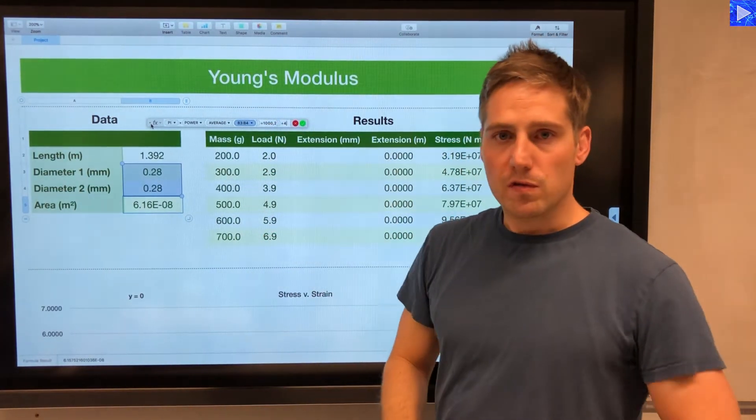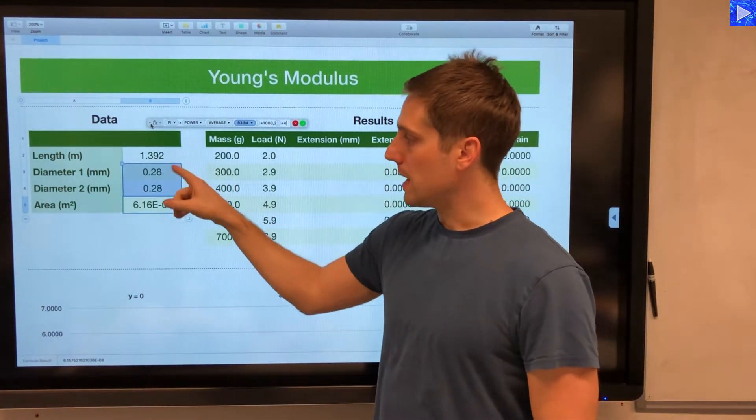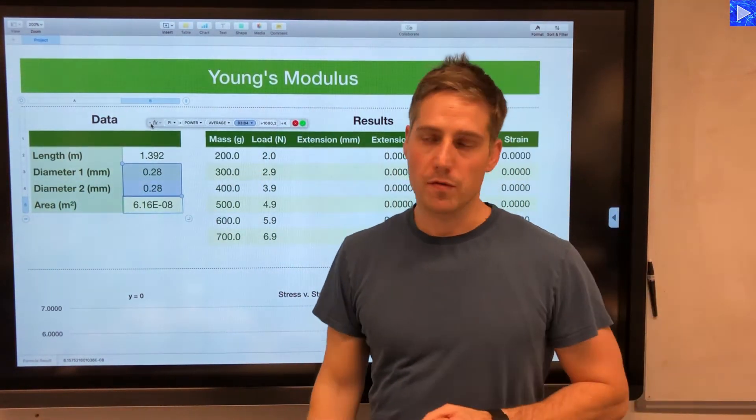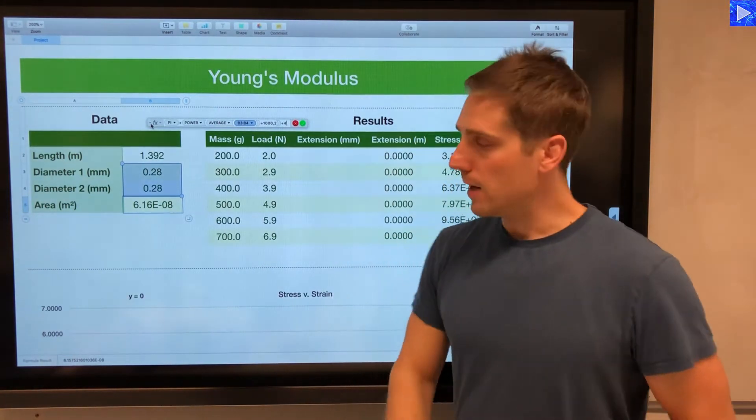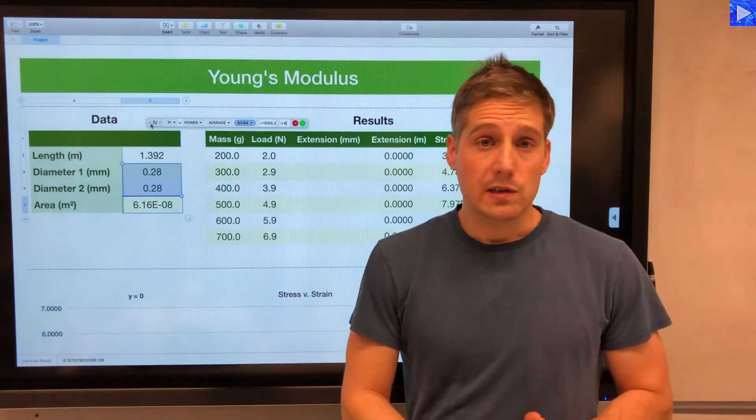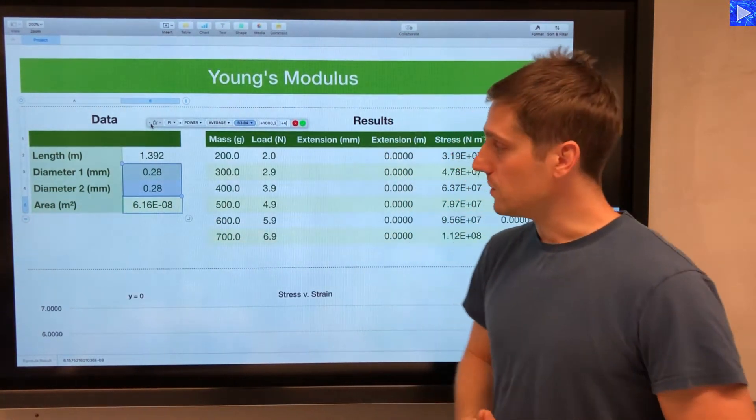Raised to the power of 2, so I'm squaring the diameter, divided by 4. So that's pi d squared over 4, gives you the cross-sectional area of my wire. That's coming out as 6.16 times 10 to the minus 8 meters squared.